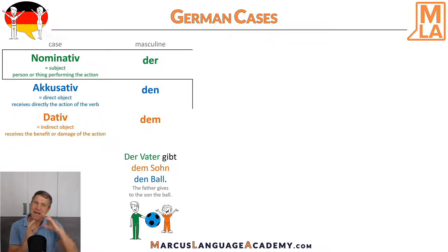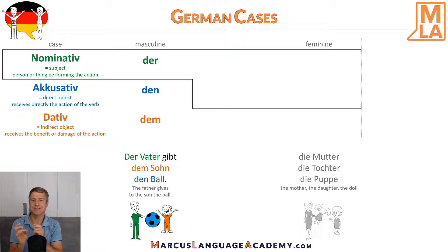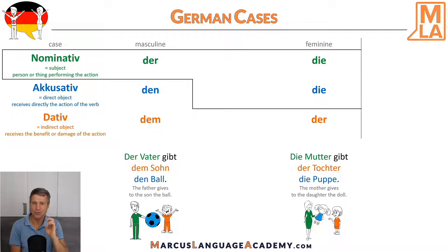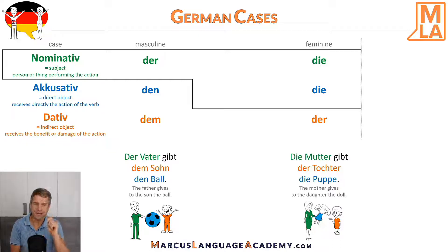Besides the masculine article, we also have the feminine article 'die'. For example: die Mutter, die Tochter, die Puppe. Die Mutter gibt der Tochter die Puppe — the mother gives to the daughter the doll. There is no change in the article in the nominative and accusative case; it remains 'die'. But in the dative case, the article 'die' becomes 'der'.